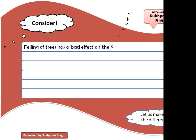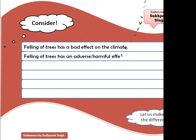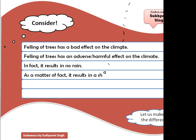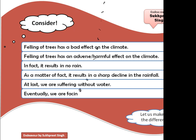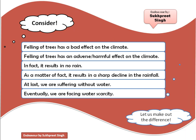Consider these sentences: 'Felling of trees has a bad effect on the climate' versus 'Felling of trees has an adverse or harmful effect on the climate.' 'In fact, it results in no rain' versus 'As a matter of fact, it results in a sharp decline in the rainfall.' 'At last we are suffering without water' versus 'Eventually we are facing water scarcity.' The first version in each pair is informal — when writing an article we should use only formal sentences, as it is a formal piece of writing.